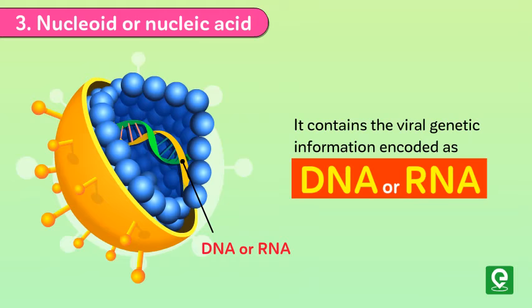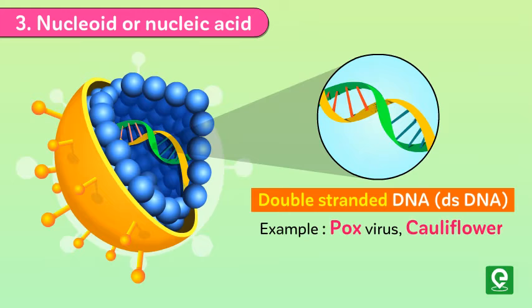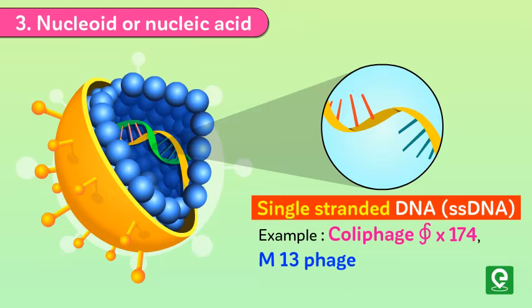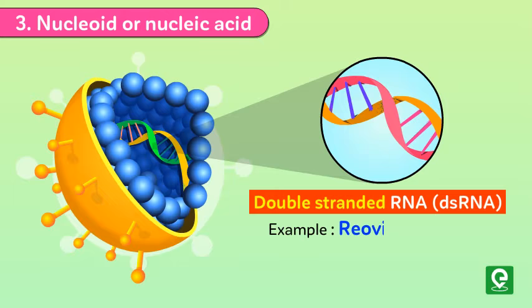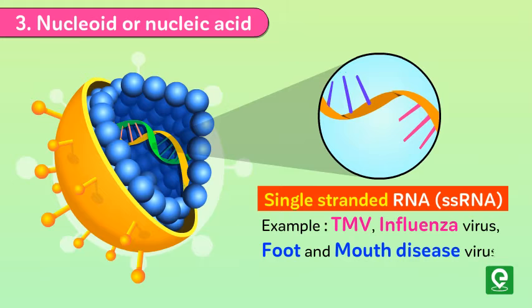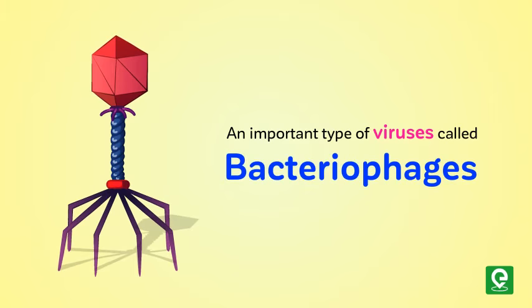DNA-containing viruses are also called deoxy viruses. These are of two types: double-stranded DNA, for example pox virus, cauliflower mosaic virus, and herpes virus; and single-stranded DNA, for example coliphage phi-X174 and M13 phage. RNA-containing viruses or ribo viruses are also of two types: double-stranded RNA, for example reovirus and wound tumor virus; and single-stranded RNA, for example TMV, influenza virus, foot and mouth disease virus, retroviruses, HIV, and M12.